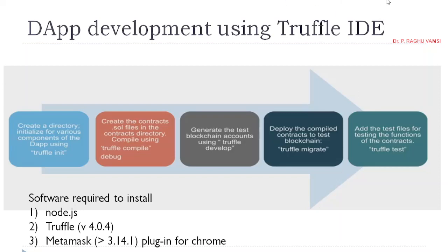So far we have seen connecting to the data. From the beginning we are going to see the things in modules, module wise. First we have seen the Remix IDE where we have written the smart contract, compiled it and got the output. After compiling the smart contract we got some outputs, artifacts like ABI, bytecode, and other gas limit estimations.